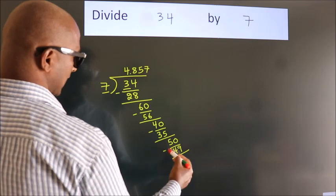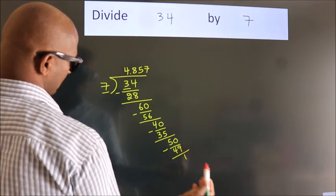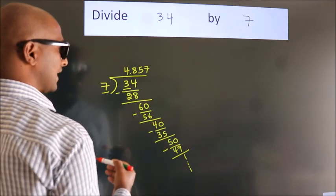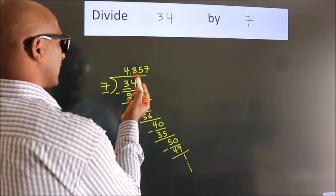Now we subtract and get 1. The division continues, but it is enough if we do up to 3 decimal places.